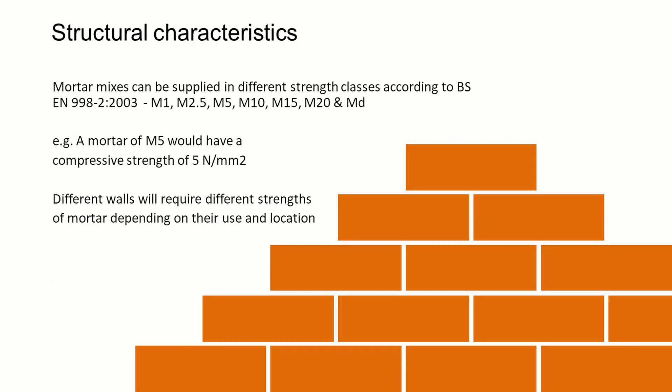Looking at the structural characteristics, mortar mixes are supplied in different strength classes. We can get very weak or very strong mortars, and these are usually specified according to British Standard in various M classes. Different mortar manufacturers will have different M classes they can supply. For example, an M5 mortar would have a compressive strength of five newtons per millimetre squared. Different walls will require different strengths of mortar depending on their use and location.